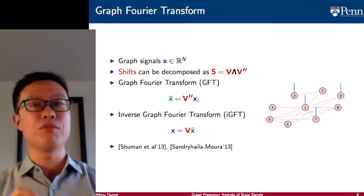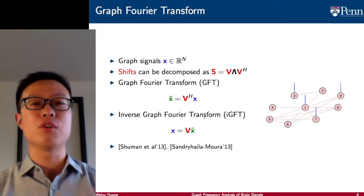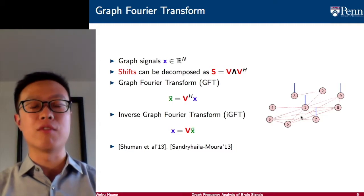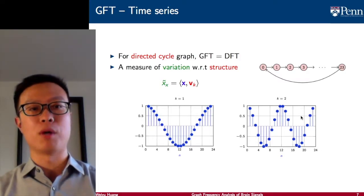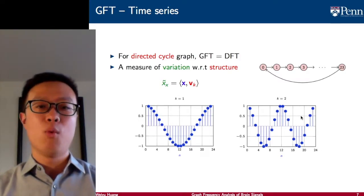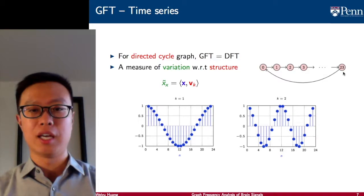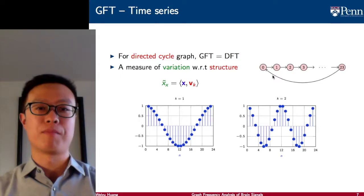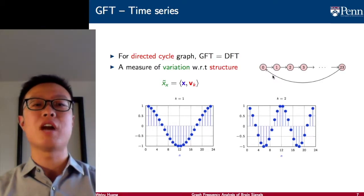The graph Fourier transform (GFT) is defined as the inner product between the eigenvector and the graph signal. This measures the coefficient for each of the graph frequency components. We can also use the inverse graph Fourier transform, which reconstructs the actual signal in the graph domain using the eigenvectors and graph Fourier coefficients. The most important property of the graph Fourier transform is that when the underlying graph is a directed cycle, for example the hours within each day, then the graph Fourier transform is the same as the discrete Fourier transform. Therefore, similar to Fourier analysis, GFT also has an underlying notion of variation with respect to the underlying structure.